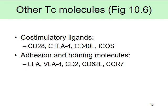T cells also have co-stimulatory ligands — just like B cells. On top of the receptor and co-receptor, there are co-stimulatory ligands that act like accelerators. There are also molecules for adhesion and homing — the same principle as B cells.